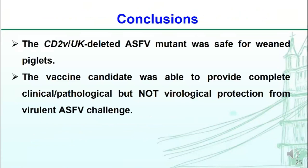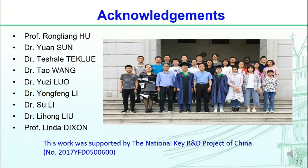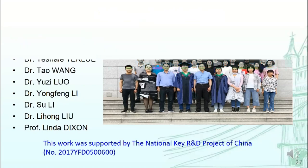In conclusion, the CD2V and UK gene-deleted virus was safe for weaned piglets, and the vaccine candidate was able to provide complete clinical protection, but not full sterilizing protection from viral DNA challenge. In the future, we will optimize the vaccine candidate and vaccination procedure, and evaluate the protection with different doses and administration routes, and the protection of pigs of different ages and health states, and the duration of protection. We would like to thank Professor Hu Rongliang, Dr. Senyuan, Dr. Tashila, Professor Linda Dixon, and other contributors. This work was supported by the National Key R&D Project. Thank you very much.